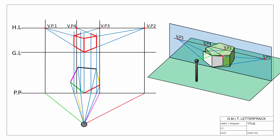The reason we didn't need to find a vanishing point for the final edge is that we have enough information to simply join those two points to give us the back edge — saving ourselves a little extra work. That's the completed object: here the 2D version, here the 3D version.